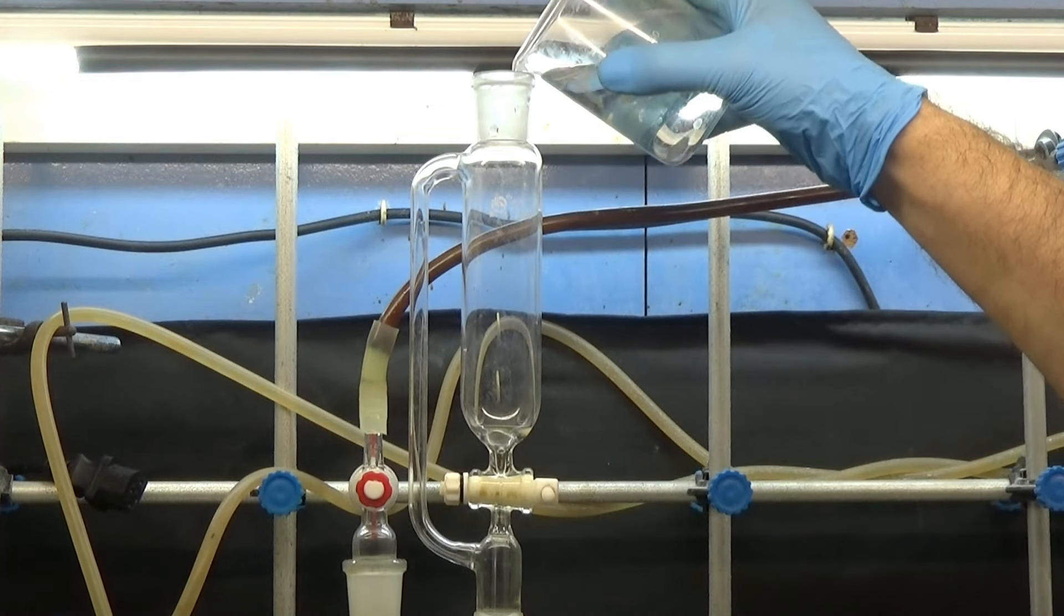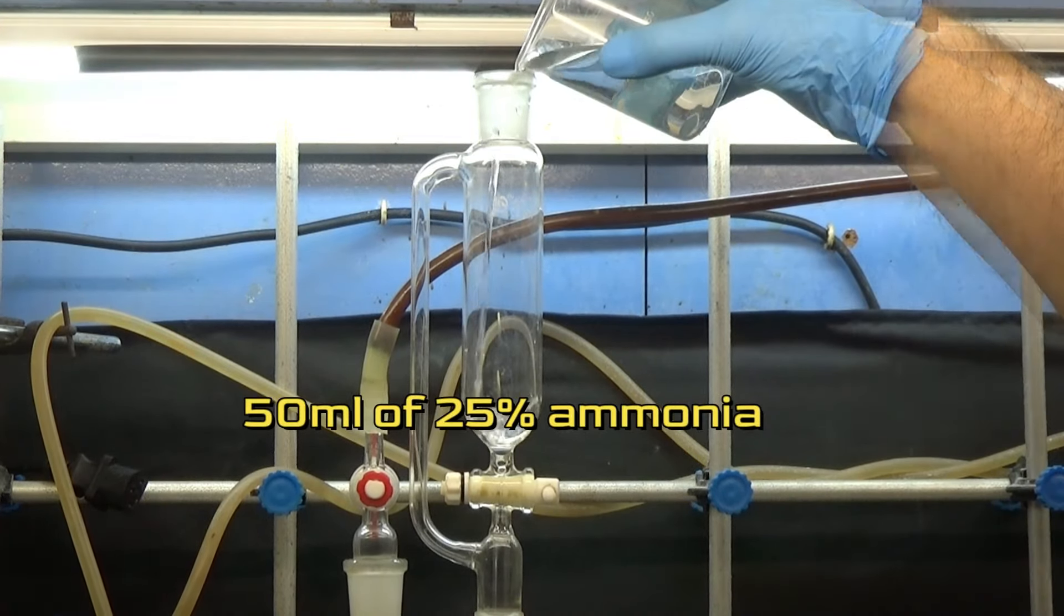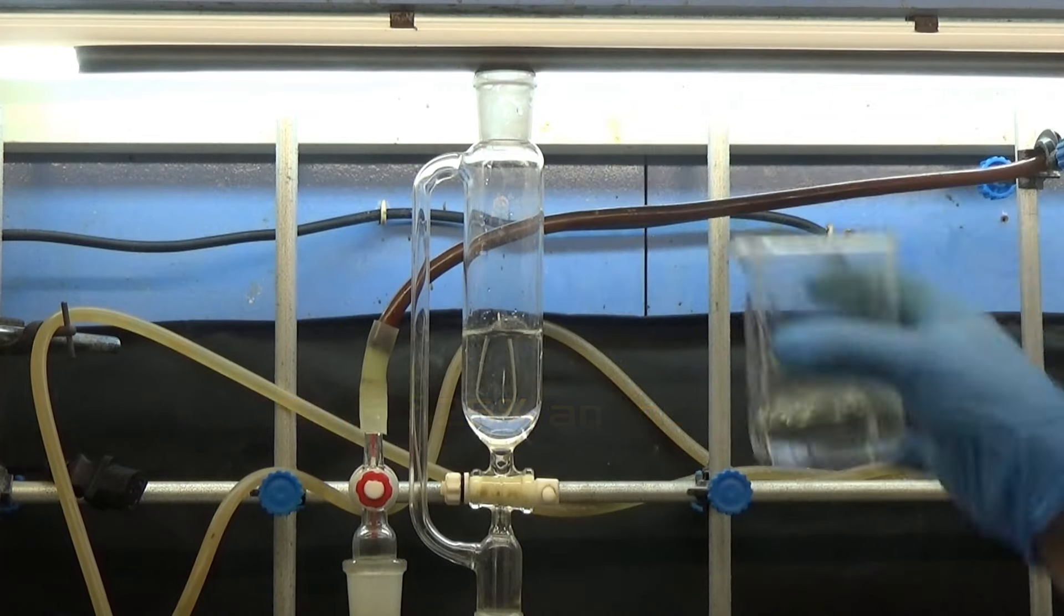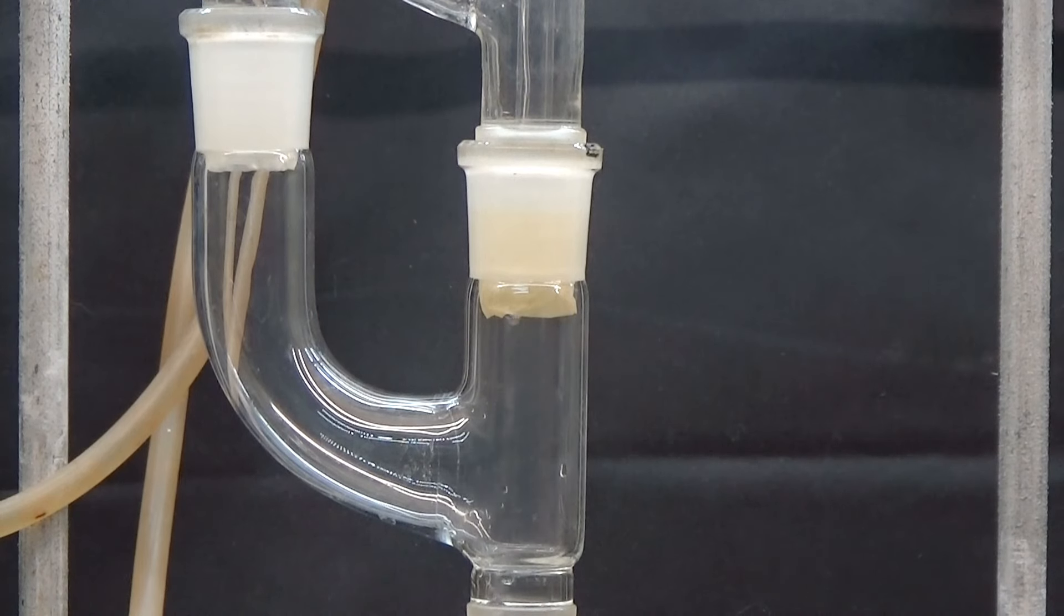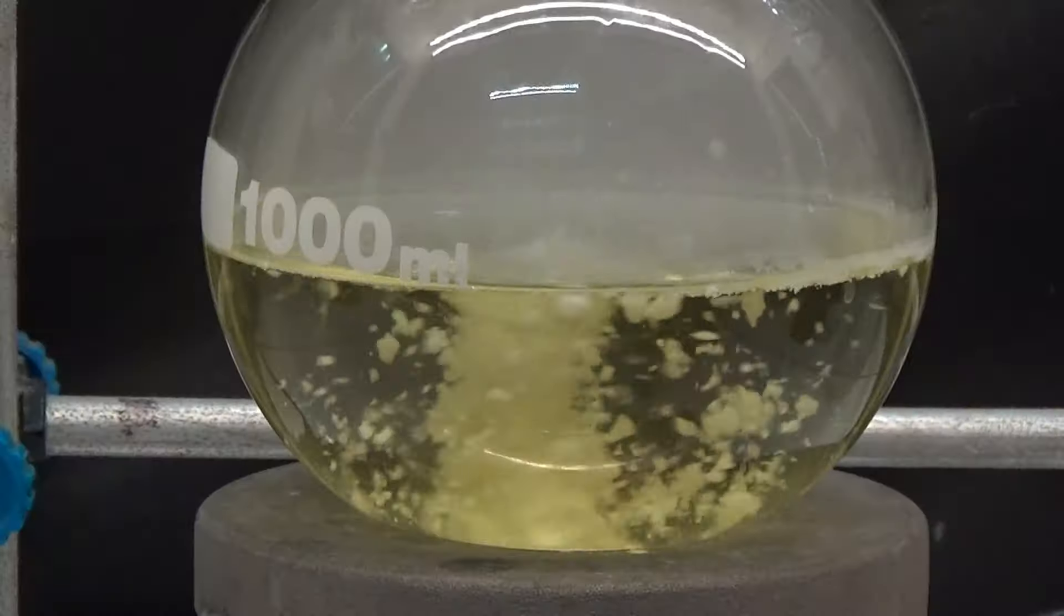Put 50 milliliters of 25% ammonia in the addition funnel. Add the ammonia slowly to the solution obtained to precipitate the phenylglycine.